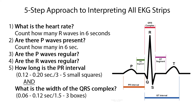First, let's take a look at a simple 5-step approach to reading all EKG strips. Step 1: What is the heart rate? Count how many R waves in 6 seconds — this is the ventricular heart rate. The QRS complex represents the ventricles contracting. Step 2: Are there P waves present? Count how many in 6 seconds — this is the atrial heart rate. The P wave represents the atria contracting.